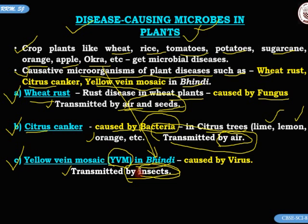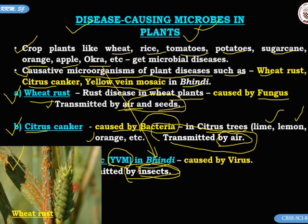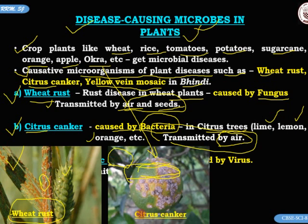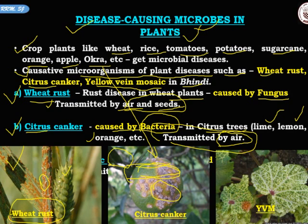Now let us look at the pictures. Here we have wheat rust in wheat — you can see the colonies of fungus. The second image shows citrus canker in citrus fruit, with the fruit getting rotten. The third image shows yellow vein mosaic disease in lady's finger. These are the three important diseases and the microorganisms that cause diseases in these three important crop plants.